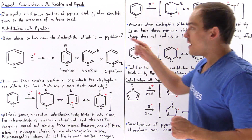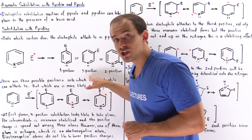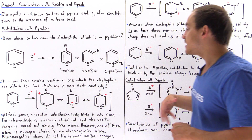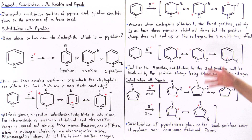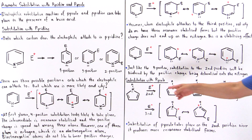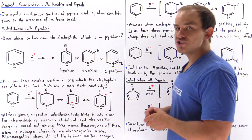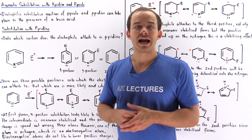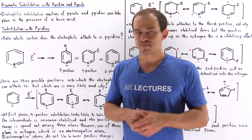So in summary: for pyridine, it's the third position that is most favored, while for pyrrole, it's the second position that is most likely to take place.